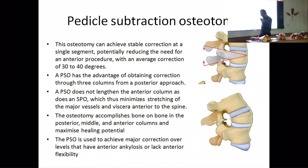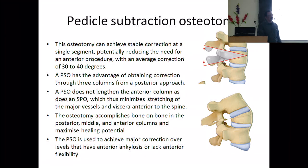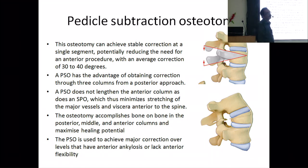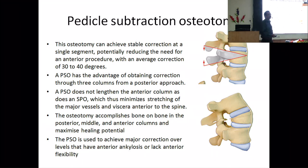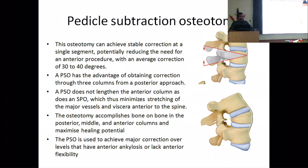To get that much correction with posterior column osteotomy alone you would have to do many levels and still may not achieve it. PSO can be done at two or even three levels if needed. If possible in the lumbar spine that is better. For angular kyphosis in the dorsal region you cannot always go to the lumbar, but for round kyphosis you can go to L1 or L2. That region is safer because the spinal cord is not there. Correction in the dorsal spine is less than in the lumbar spine.